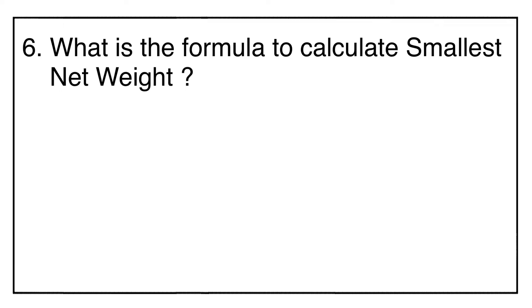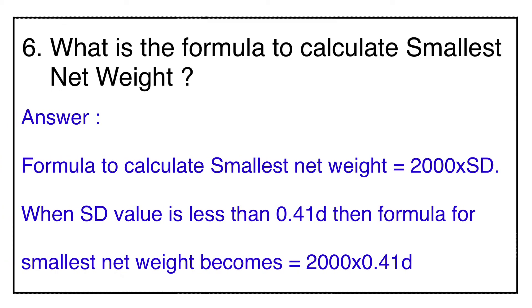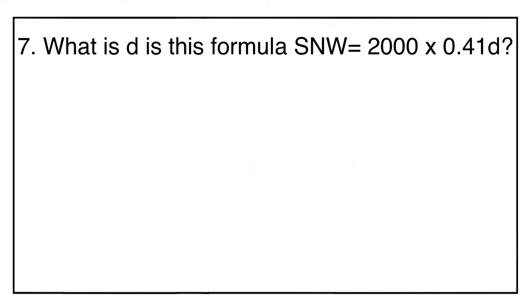Question number six: what is the formula to calculate smallest net weight? Smallest net weight = 2000 × standard deviation. This standard deviation value is taken from the repeatability test where we take 10 measurements of a test weight. If the standard deviation value is less than 0.41d, then the formula becomes: smallest net weight = 2000 × 0.41d.